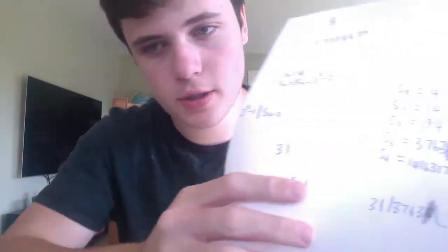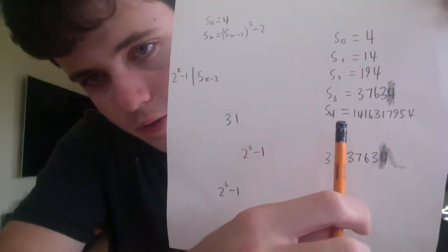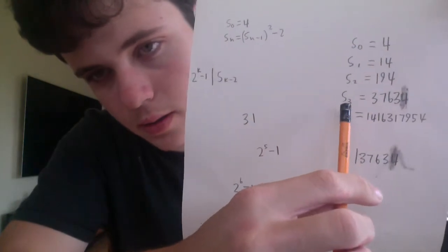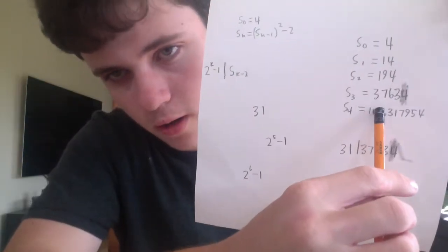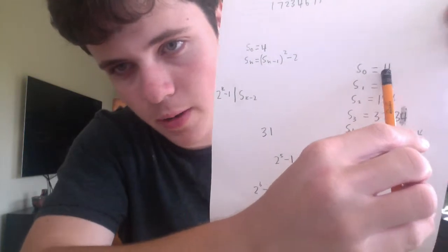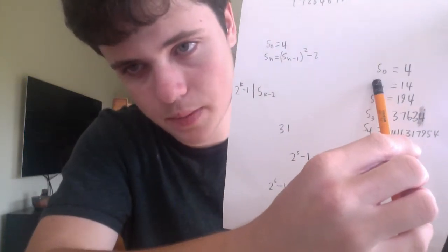Welcome to part 2 of the Lucas-Lehmer primality test. In this video, we are going to be proving a formula for our S_n function from last time. This function is pretty hard to calculate because to calculate S_4, we know S_0 is given, and then we have to calculate S_1, S_2, S_3, and S_4. So we have to do a lot of calculations. What would be really nice is if we had a way to get S_4 in just one calculation, and that is what we will be getting in this video.